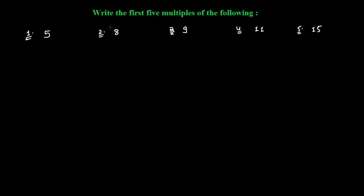The question asks us to find the first five multiples of the following numbers. Multiples have already been discussed in previous videos. Now you need to write the first five multiples of 5, 8, 9, 11, and 15 — just the first five, because you know there are an infinite number of multiples of any given number.